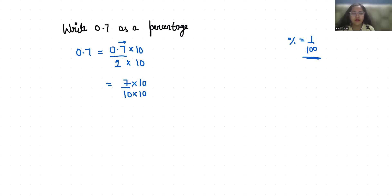So it becomes 70 by 100 which we can write as 70 times 1 by 100. Now 1 by 100 we can replace with this percentage sign. So 0.7 is 70%.